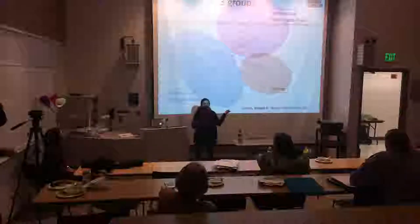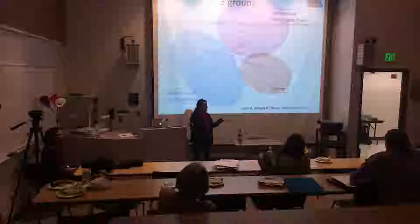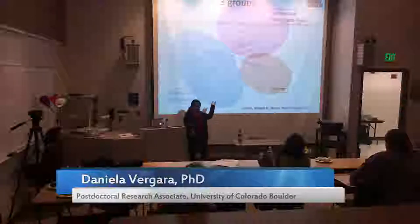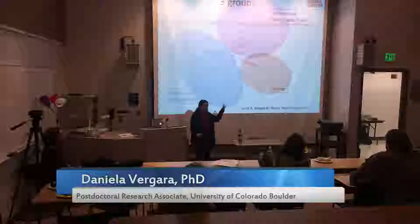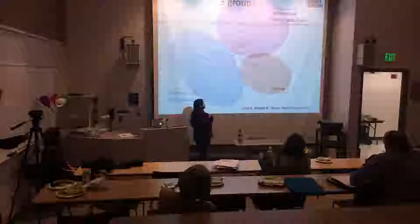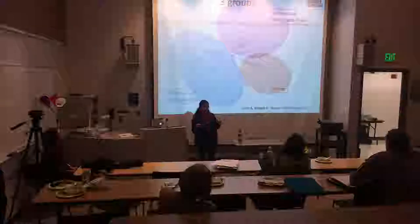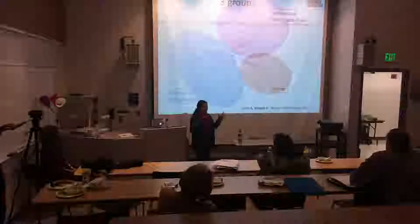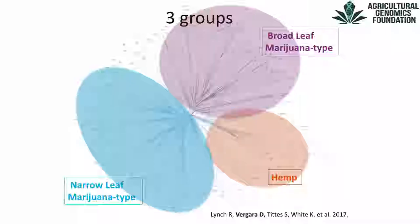This is a split tree graph showing the relationship between 195 different varieties. The closer you are to each other in the graph, the more related you are. The thread-like structure in the middle — like a spider web — represents the genomic regions shared between everyone, the ancestral genomic regions. We can see three different groupings: the broadleaf marijuana type, the narrowleaf marijuana type, and the hemp grouping.